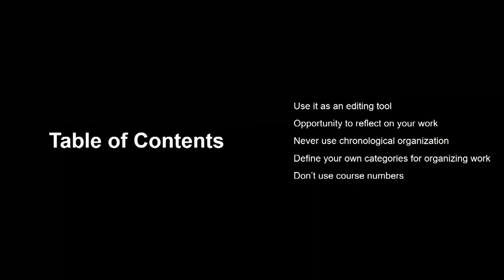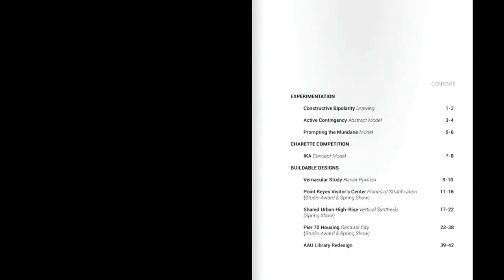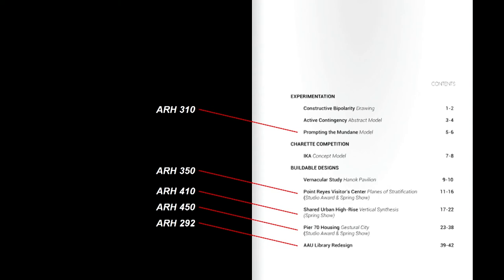Now looking at the portfolio itself: you know your audience and have checked the requirements. Editing is critical, and use a table of contents as an editing tool. The audience won't be familiar with course numbers, so an AAU undergrad student gave his own titles to projects. He put his ARH 310 project under 'experimentation' and other studios under 'buildable designs.' This is a great way to streamline and edit — showing the audience you're not just being led through required courses but actively reflecting on what you take from each.